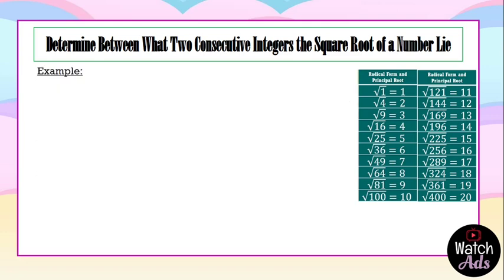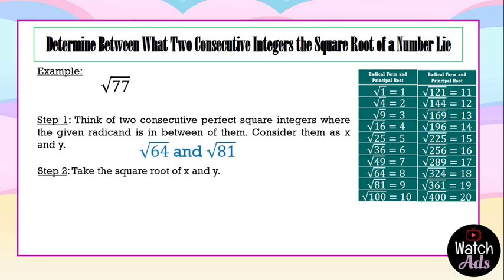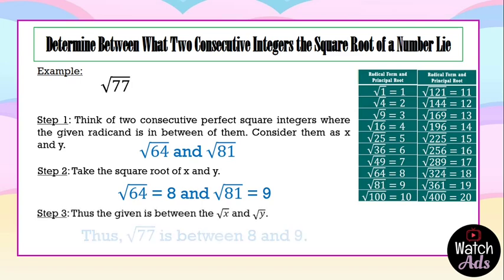Let's apply this for you to better understand. The square root of 77 — where does it lie? It must be between two consecutive integers. First, think of two consecutive perfect square integers where 77 is in between. Looking at our side note, we can find that 77 is between the square root of 64 and the square root of 81. Taking their square roots, that is 8 and 9, because the square root of 64 is 8 and the square root of 81 is 9. Thus, the square root of 77 is between 8 and 9.